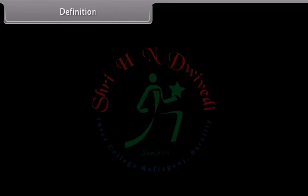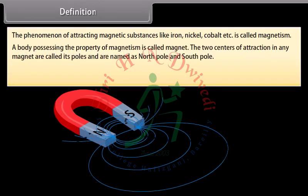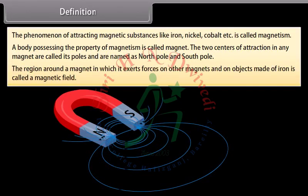Definition: The phenomenon of attracting magnetic substances like iron, nickel, cobalt, etc. is called magnetism. A body possessing the property of magnetism is called a magnet. The two centers of attraction in any magnet are called its poles, and are named as north pole and south pole. The region around a magnet in which it exerts forces on other magnets and on objects made of iron is called a magnetic field.